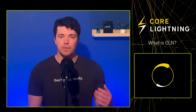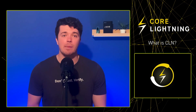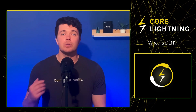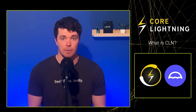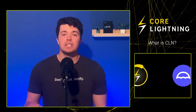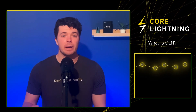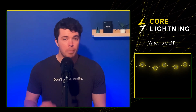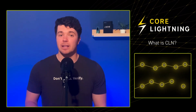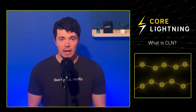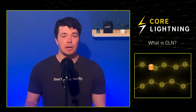Recently, developers from the Blockstream team have created an app which is available directly when installing CLN on Umbrel. The CLN app allows you to send and receive Bitcoin, open and close Lightning channels, transact via the Lightning Network, and route payments through it.